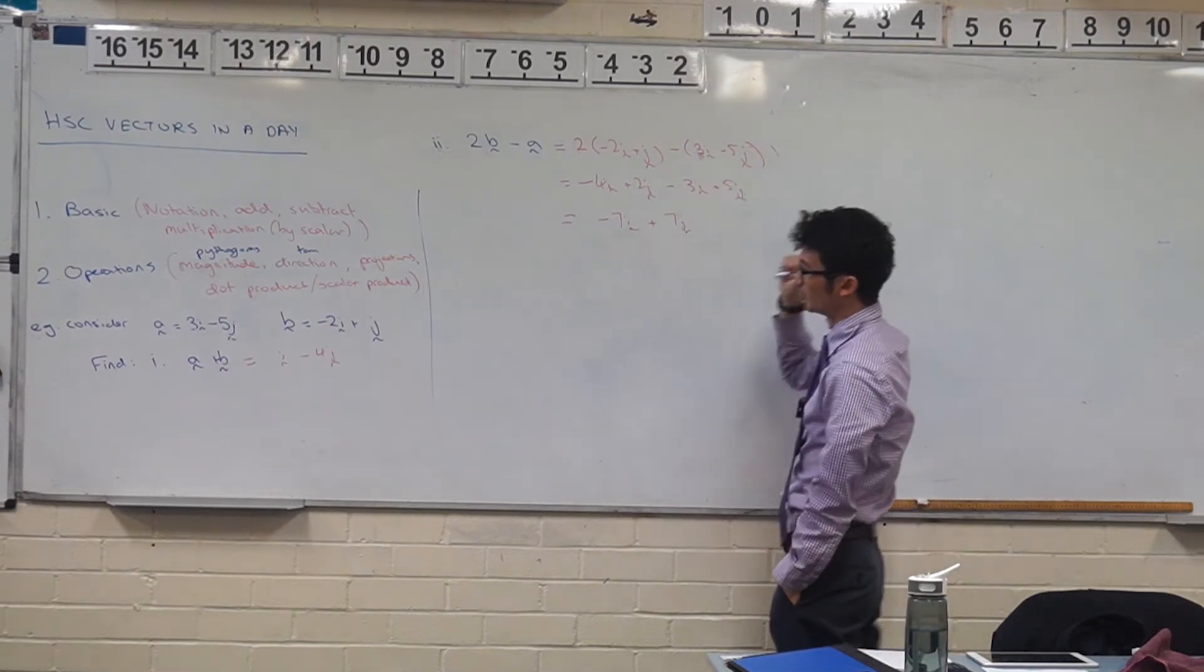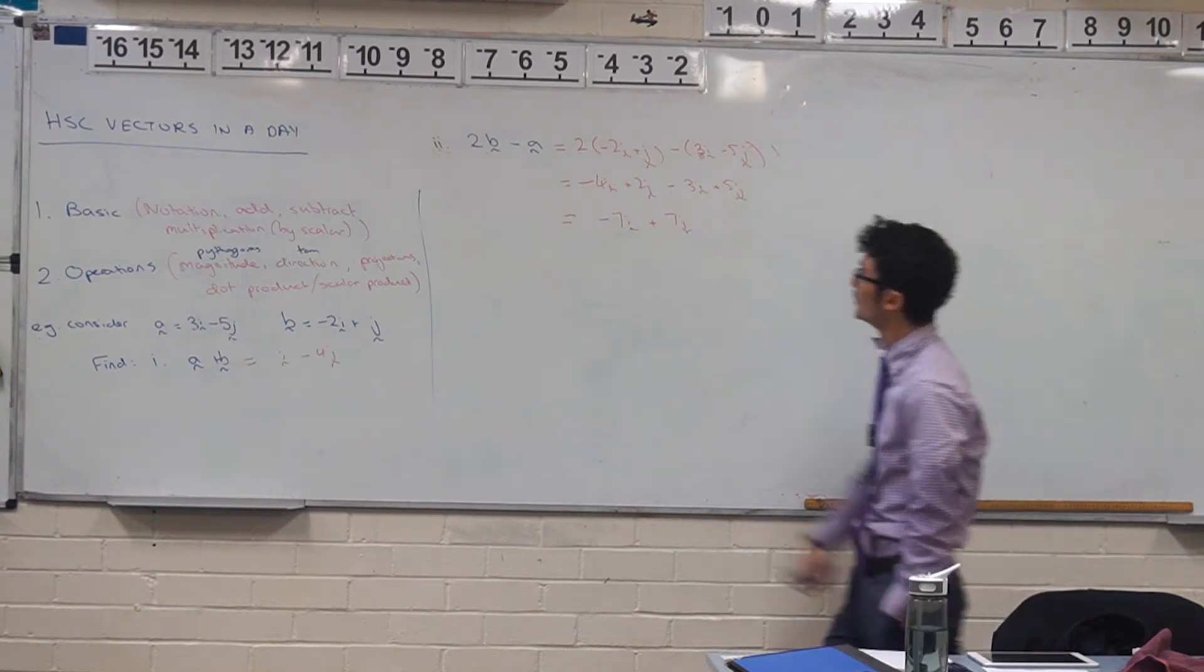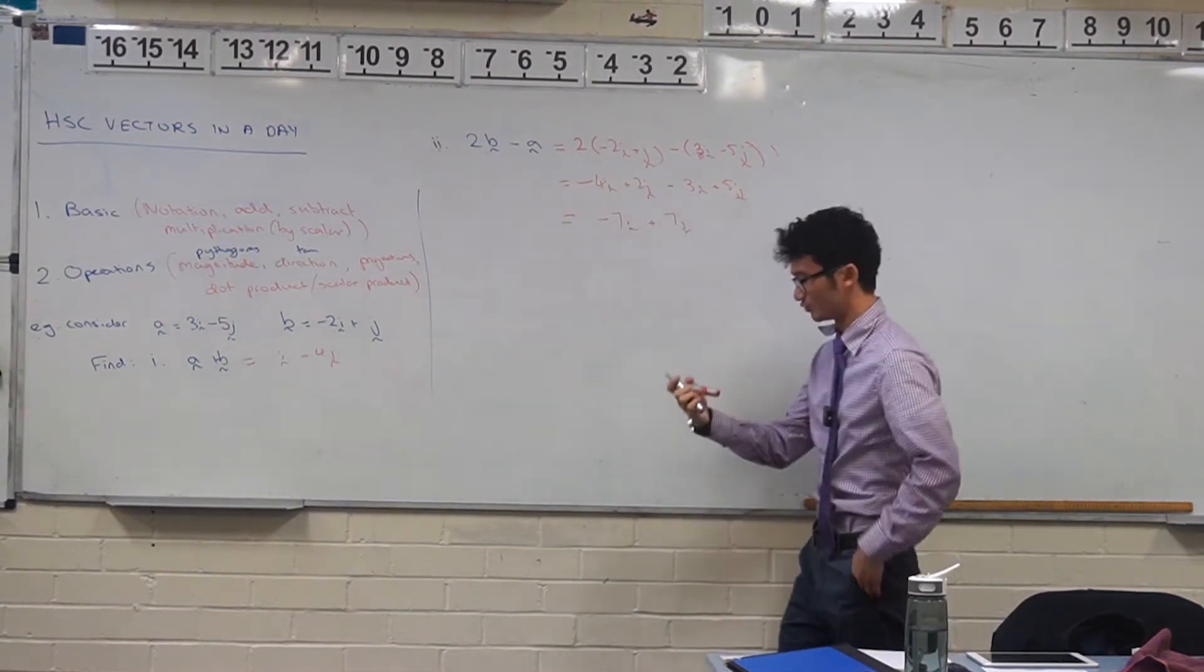And I didn't have to write it out in this form over here. If you can do it in your head that's fine too. I just want to show you clearly what's going on. So that's multiplication by a scalar and subtraction of vectors as well.